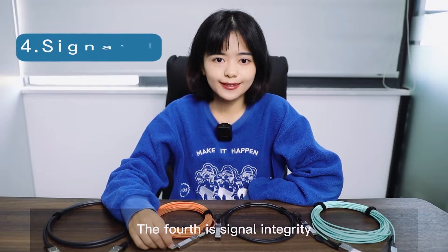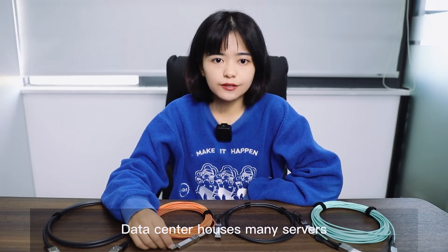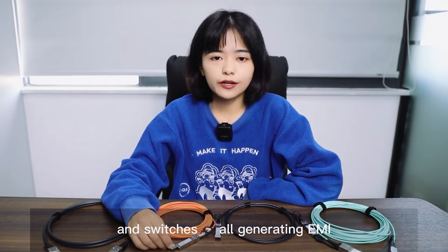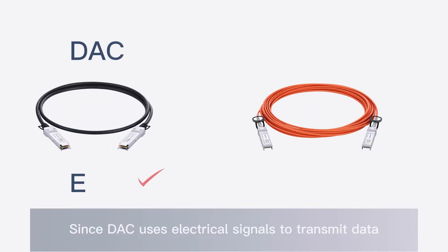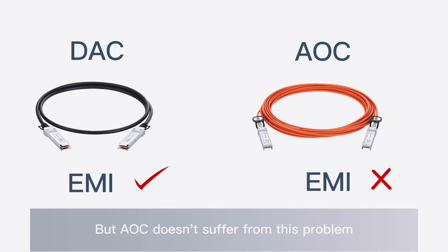The fourth is signal interference. Data centers house many servers, routers, and switches, all generating EMI. Since DAC uses electrical signals to transmit data, it is possible that EMI will obstruct connectivity. But AOC doesn't suffer from this problem, and can be used in most situations.